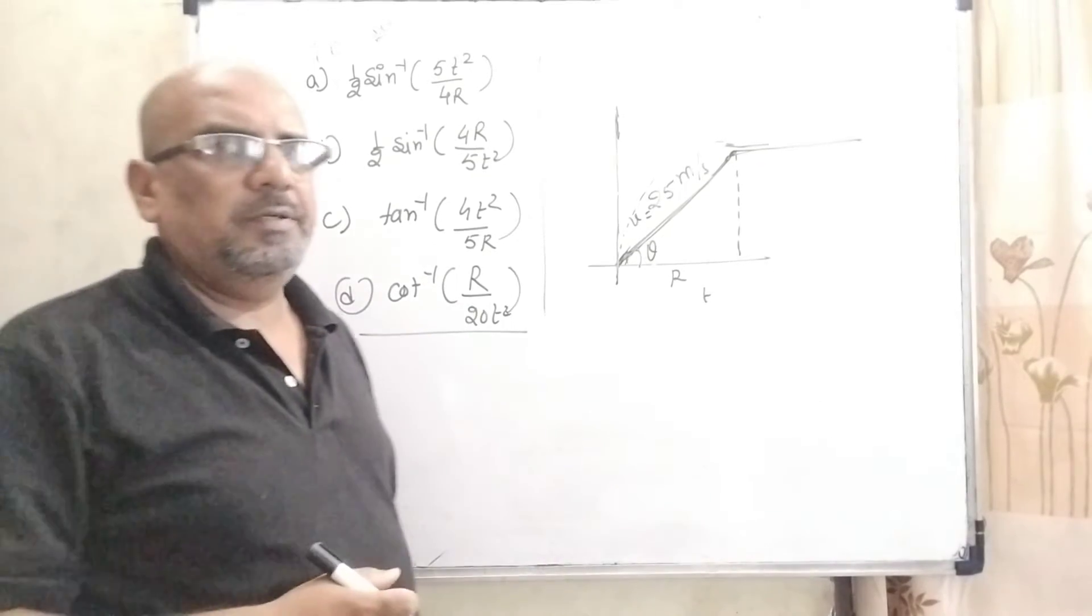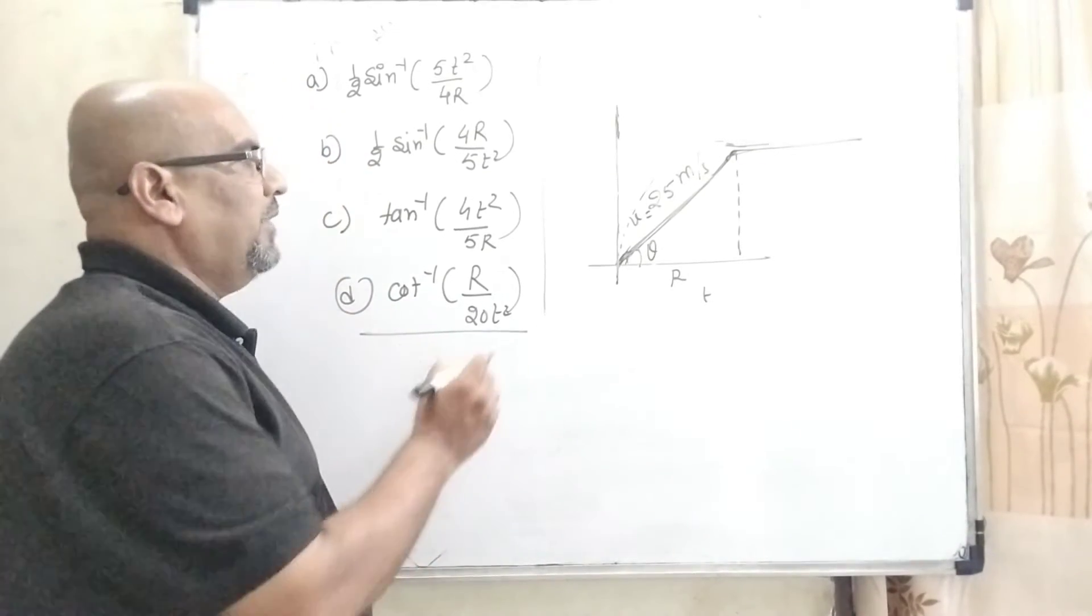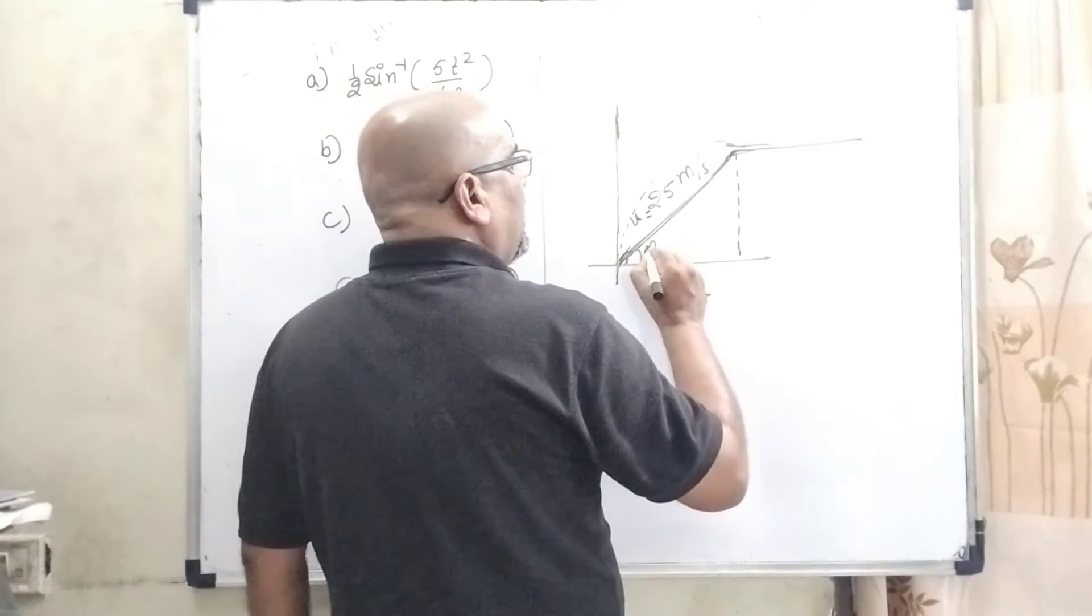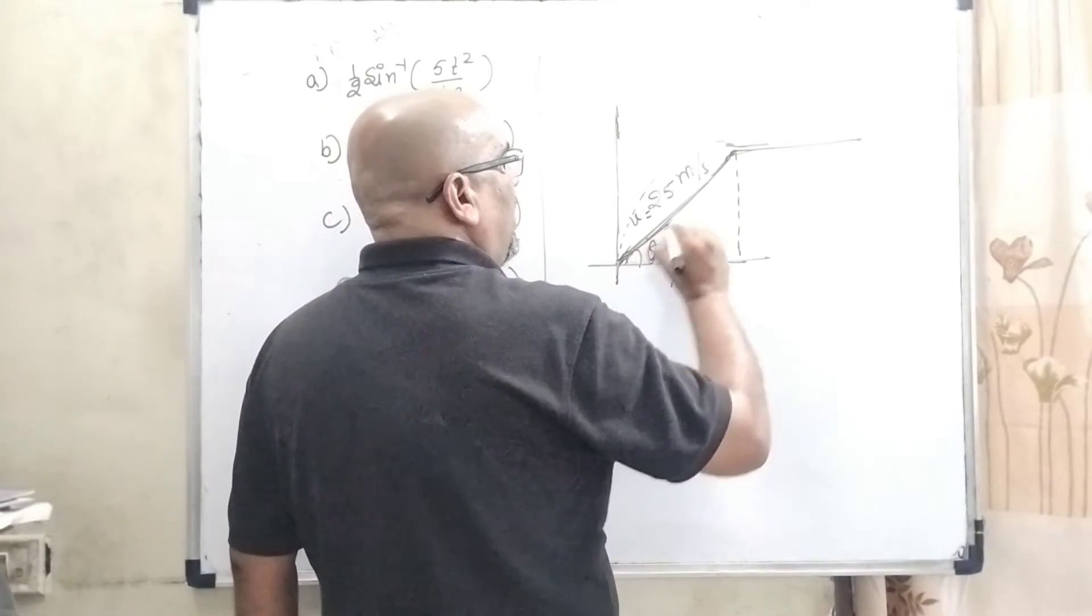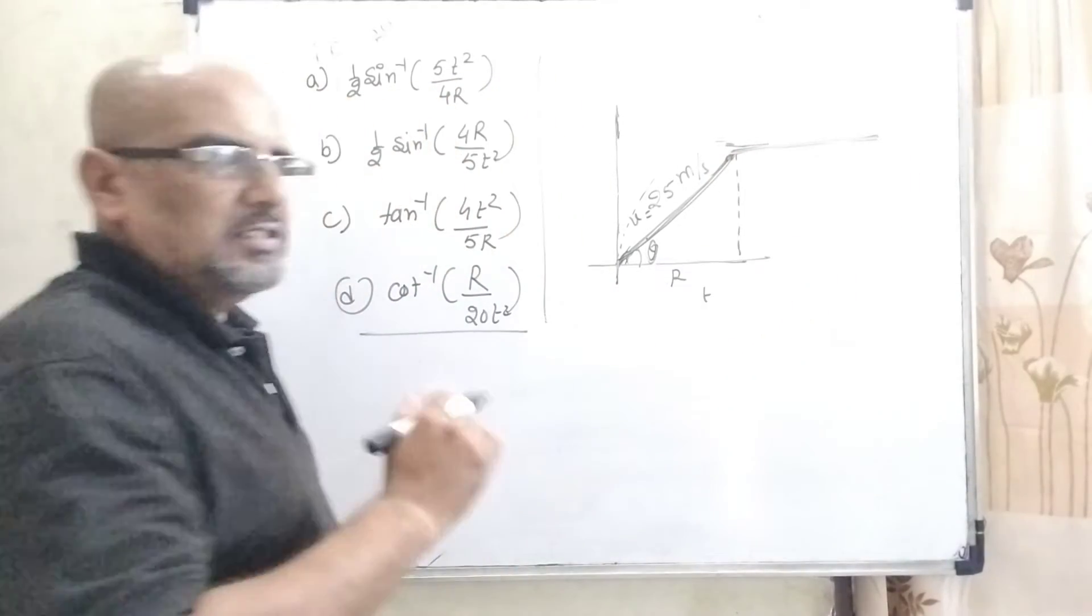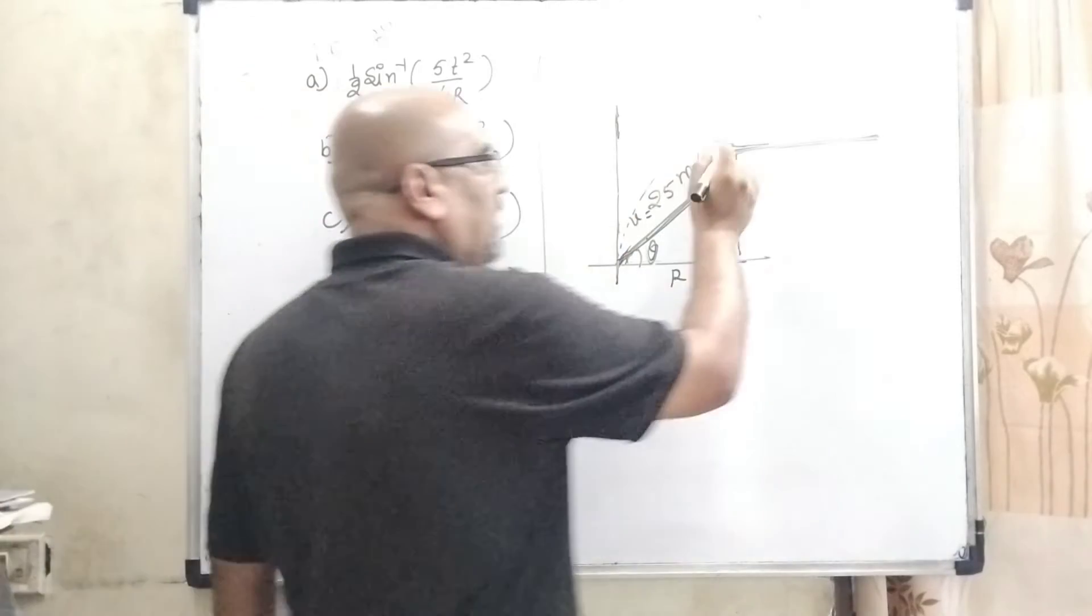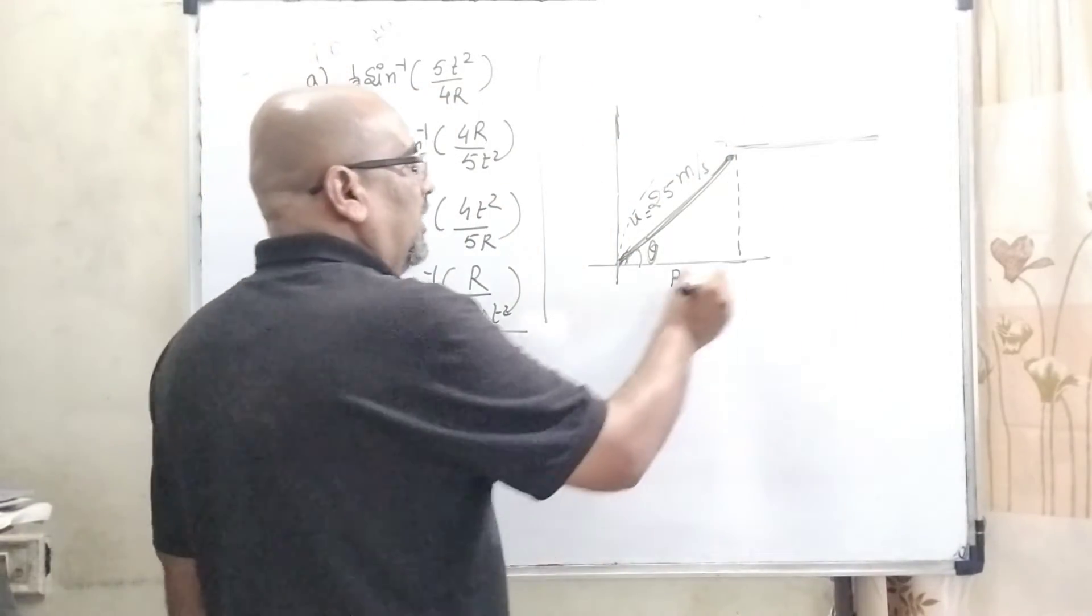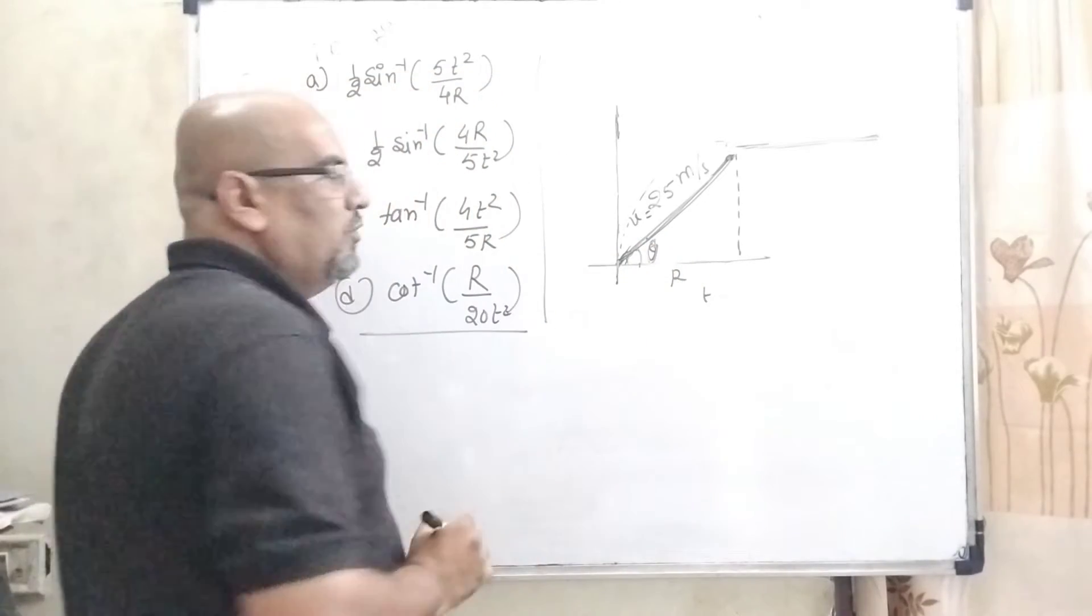Now let us first understand what the question says. Here an object is thrown making angle theta with the horizontal, and after some time it becomes a straight line or we can say horizontal, means theta equal to zero, inclination becomes zero. So here we have to find out what is the value of theta.